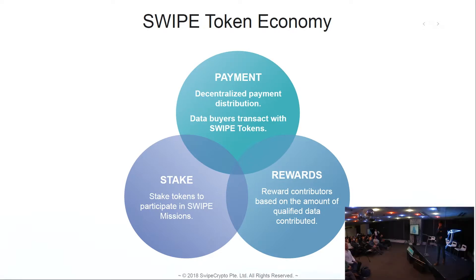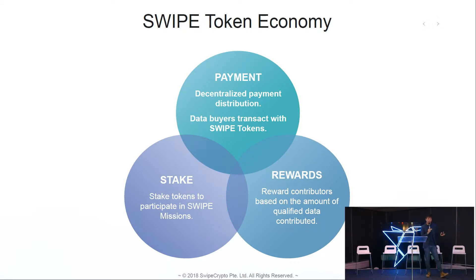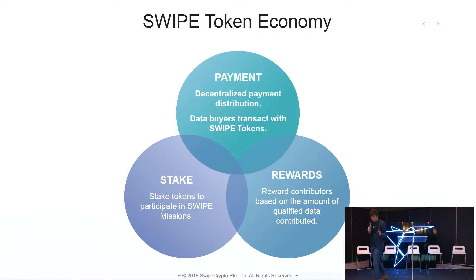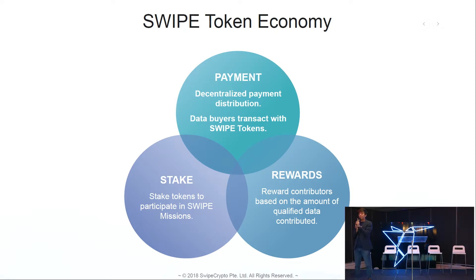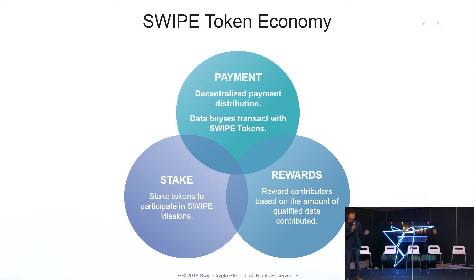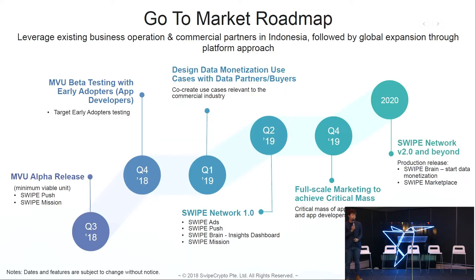What's our token economy? We have three portions. First, to enable payment through our tokens — decentralized payment distribution where data buyers transact using Swype tokens. Next, we want to reward all data users as well as app developers. In the past, app developers could only do a one-time sale to centralized data intermediaries, but with Swype, every transaction earns them rewards. The last part of our token economy is staking, which is pretty important for us.